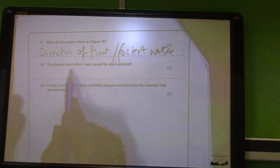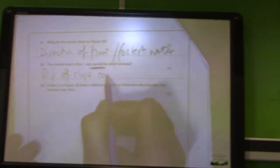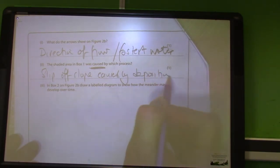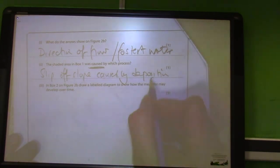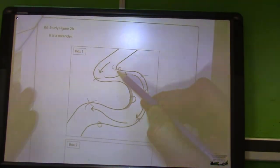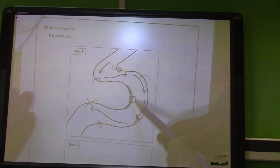Then it goes back to the shaded area in box 1 was caused by what process? We know it's a slip-off slope and slip-off slopes are caused by deposition. So it's a slip-off slope caused by deposition, which you could actually add is caused by the slowest running water. The slowest running water is always on the inside bends. Therefore we've got deposition because the river can't hold its suspended load so it dumps it, deposits it.